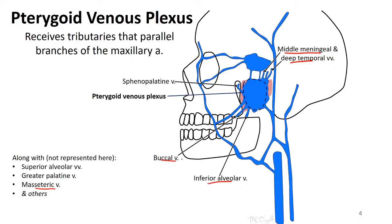A lot of these also parallel V3 branches. One that we haven't talked about quite yet, but you'll hear about more in the future, is the sphenopalatine vein, which will be coming from the pterygopalatine fossa.